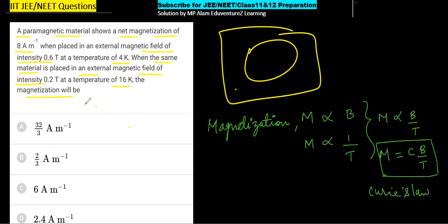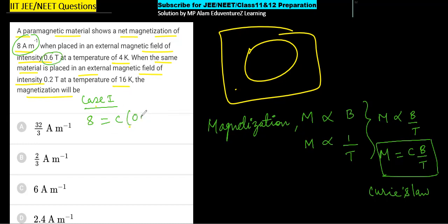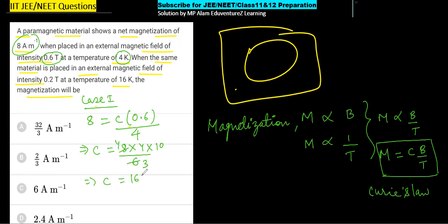Case 1 में magnetization 8 ampere per meter दिया हुआ है। तो 8 = C × 0.6 / 4। इससे C = 8 × 4 / 0.6 = 160/3। तो Curie constant C की value 160/3 आ गई।